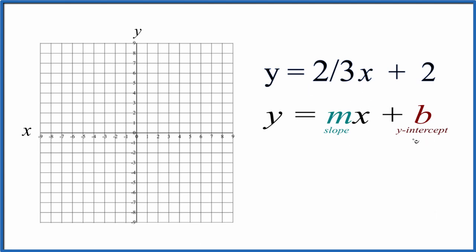So the y-intercept is two. That's where we're going to cross the y-axis. So we go to the y-axis and we go to two. That's where our line will cross the y-axis.